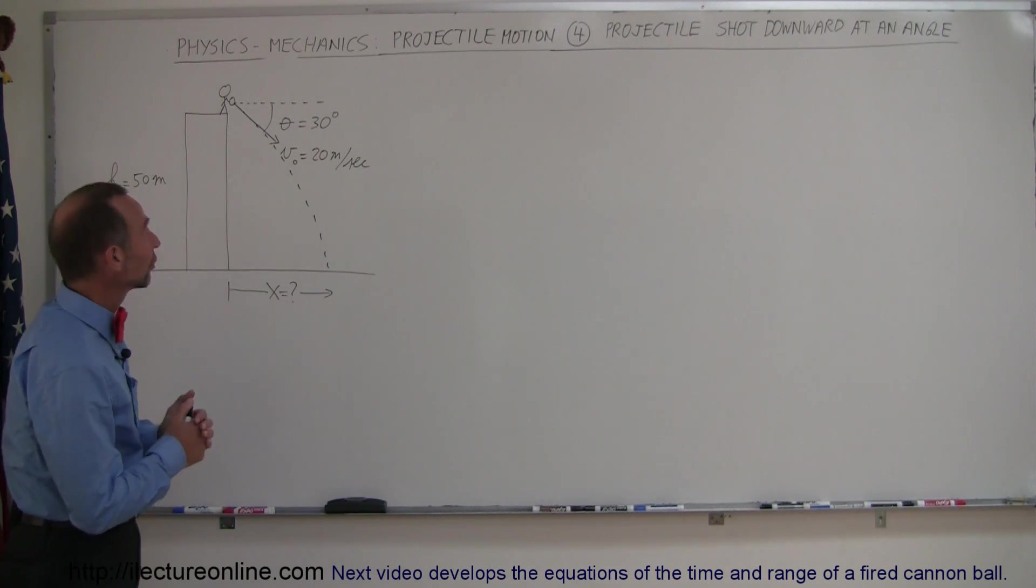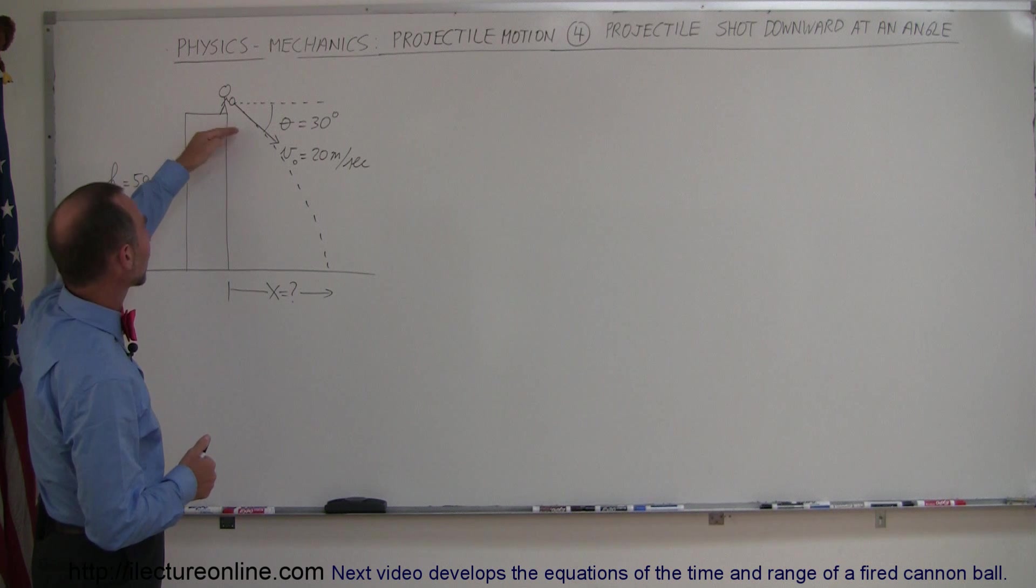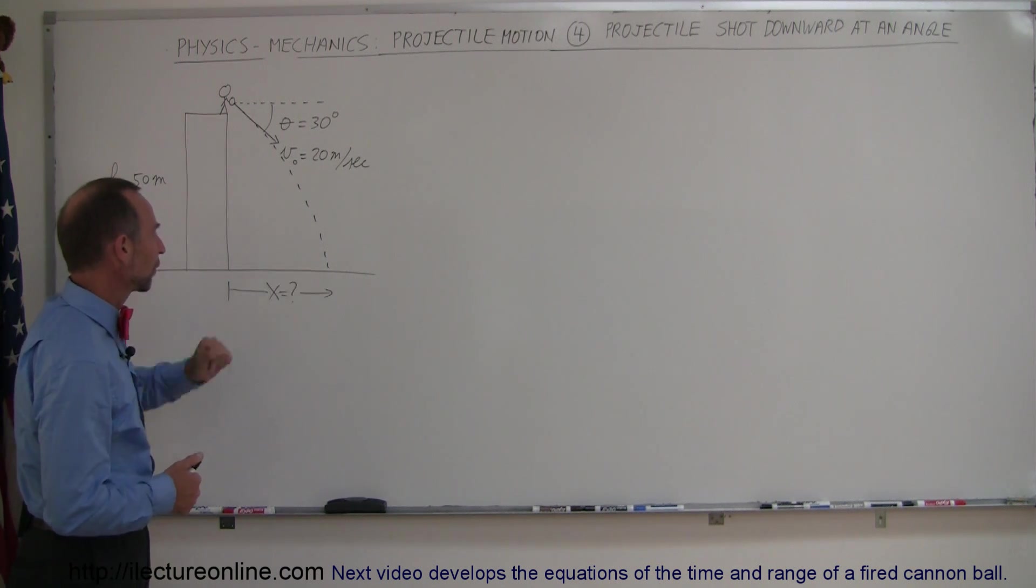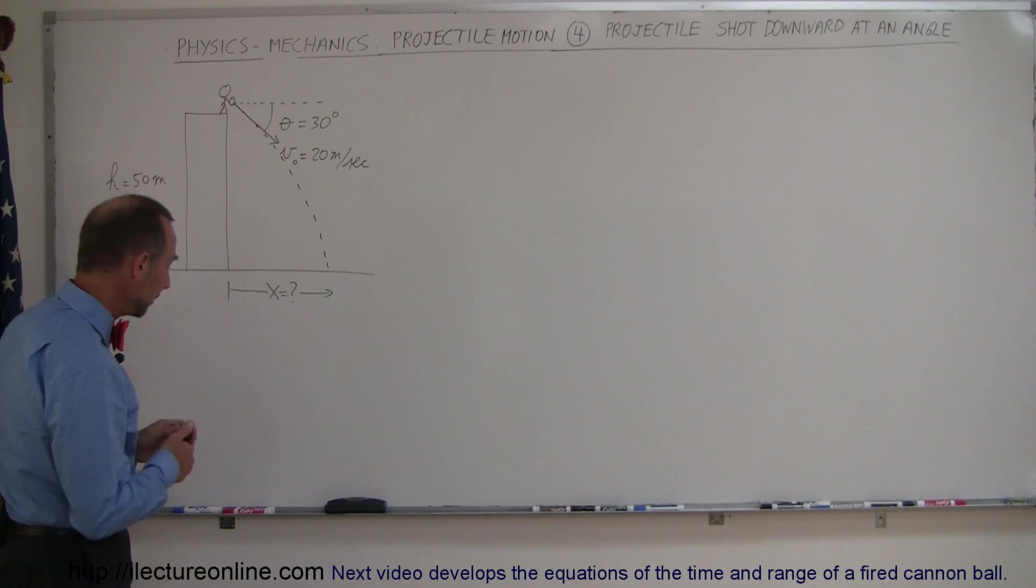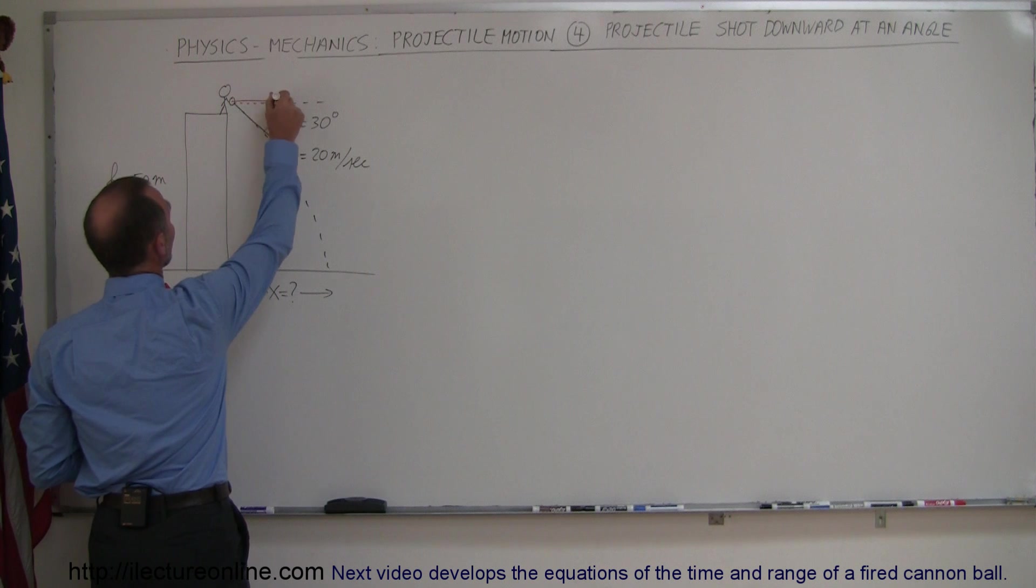In our next example we're going to throw the object downward at an angle below the horizontal from a height of 50 meters. Again the question is how far it will go before it hits the ground, and again before you start the problem you really should find the x and y components of your velocity.